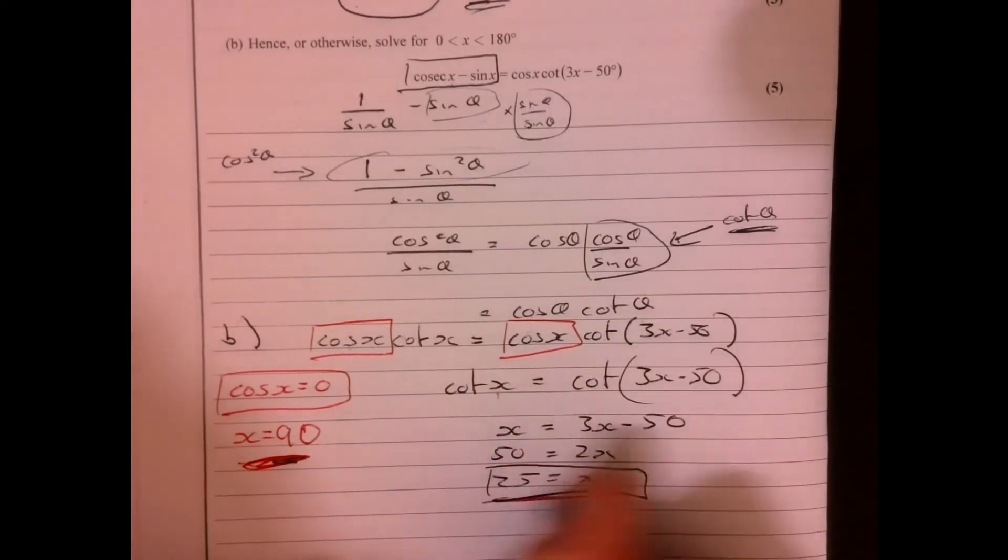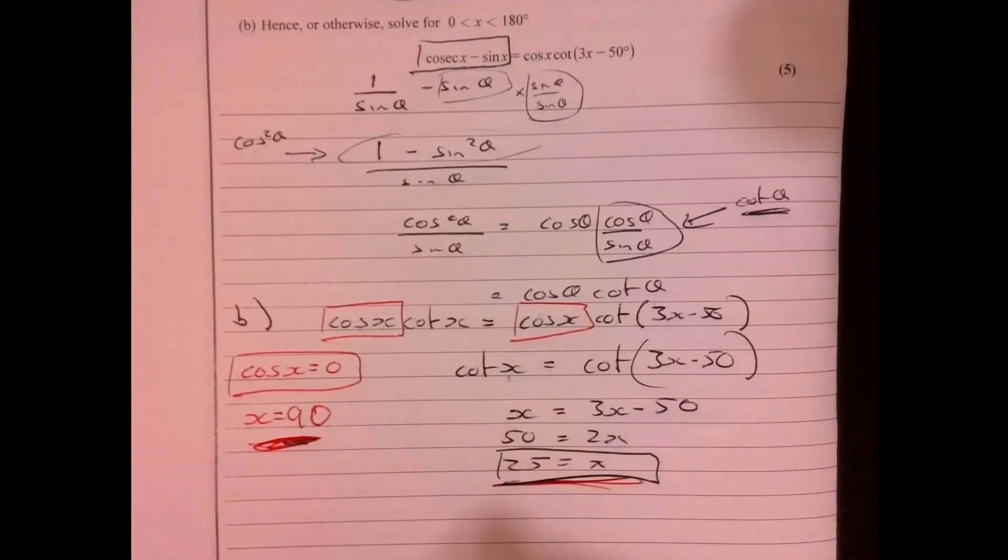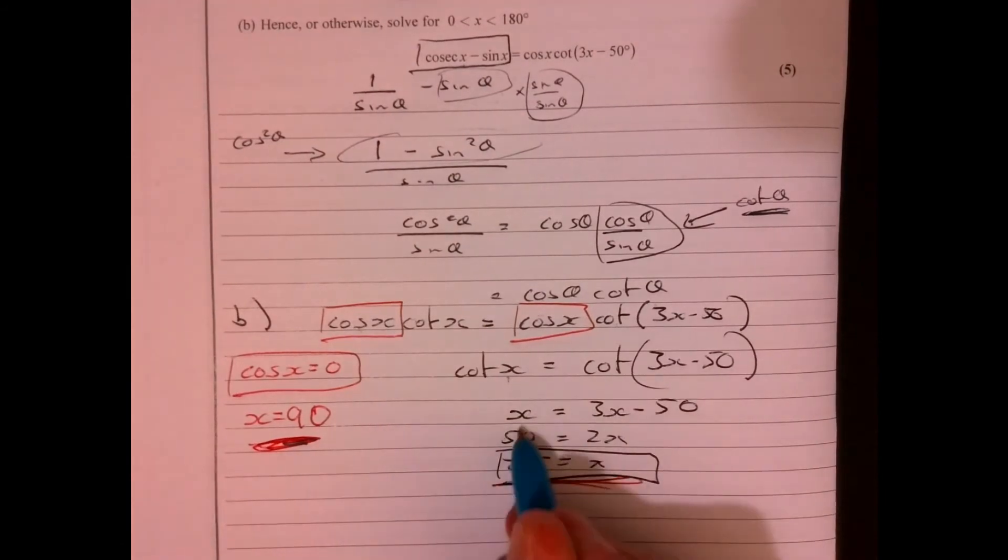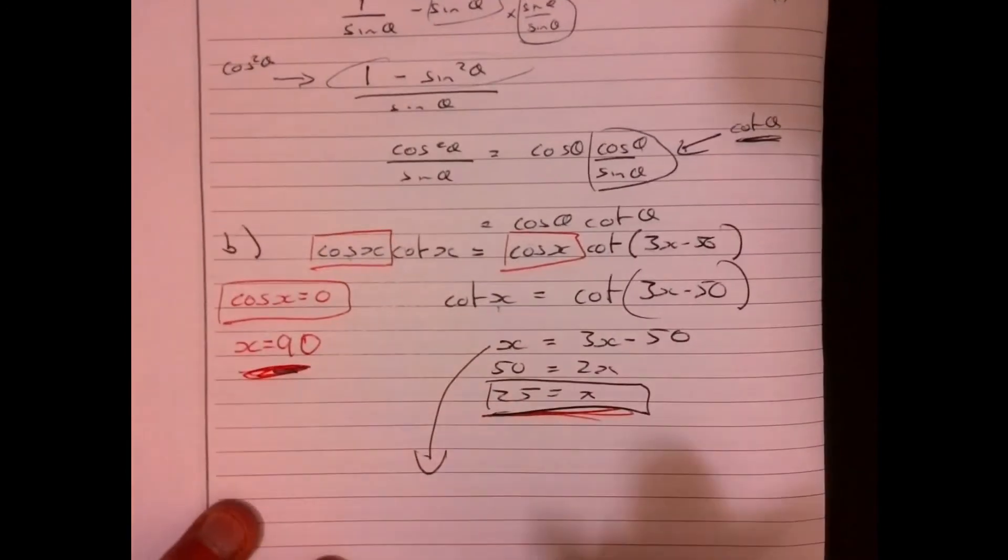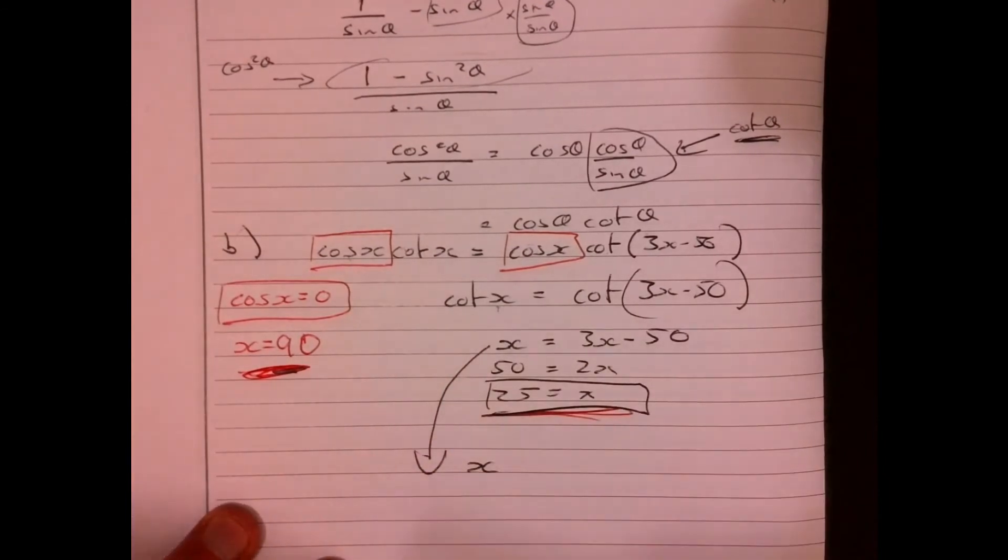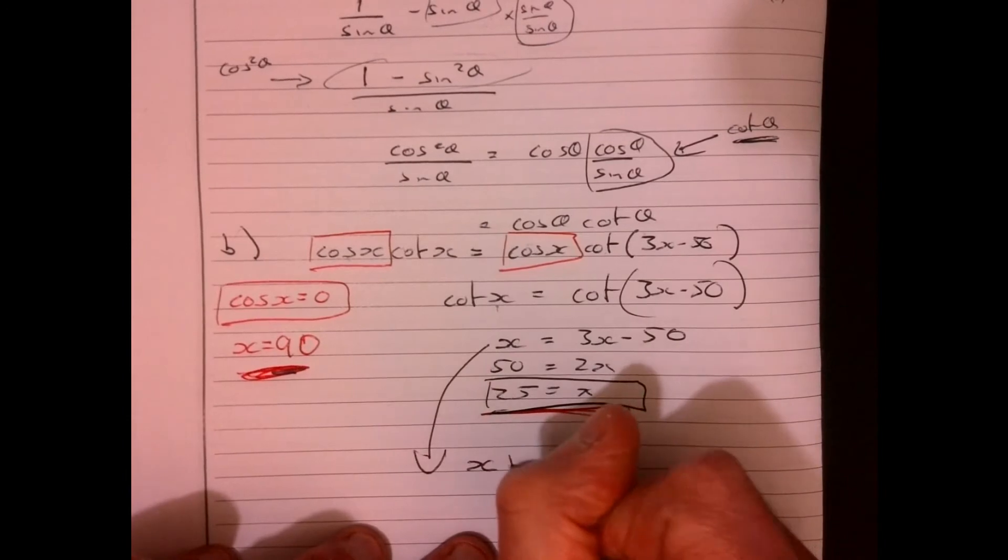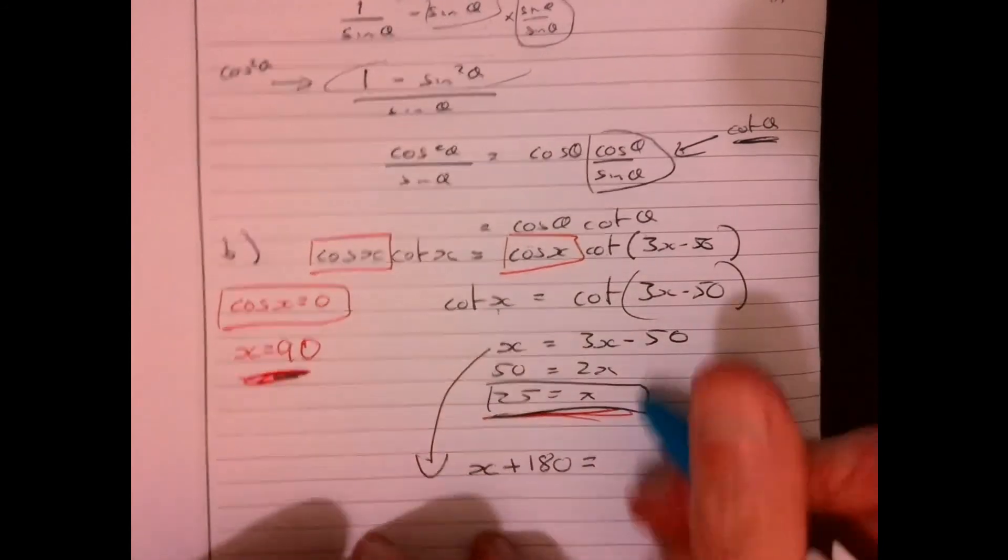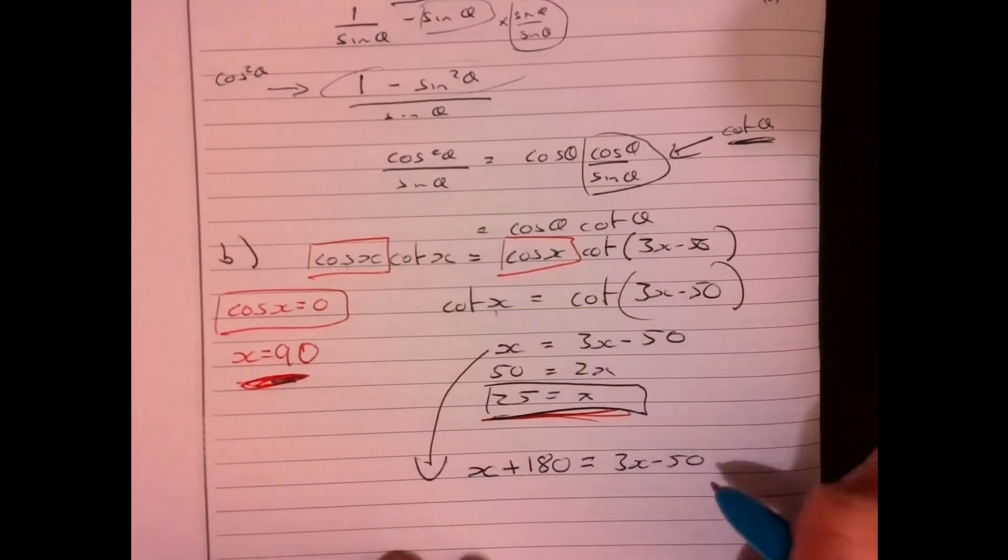But if you think about cot, think about tan. Tan has a period of 180 degrees. It repeats itself. So we can also say, remember, tan has a period of 180 degrees. So cot, therefore, is going to be the same idea. So therefore, x plus 180 must equal 3x minus 50.